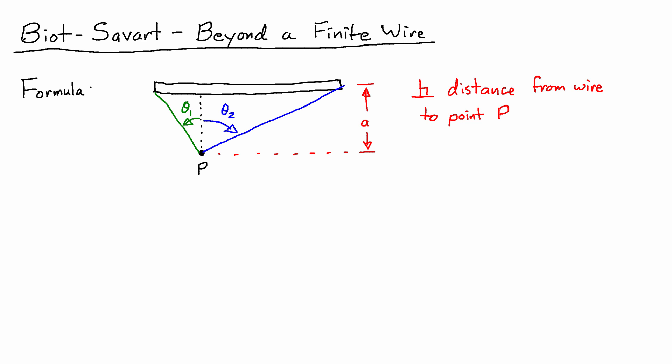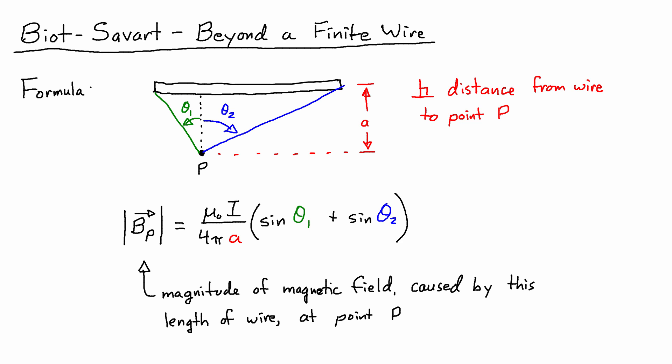Based on this setup, we get the magnetic field strength at point P equal to mu naught I over 4 pi A times sine of theta 1 plus sine of theta 2. And again, for the derivation of that, see the YouTube video link in the description box.